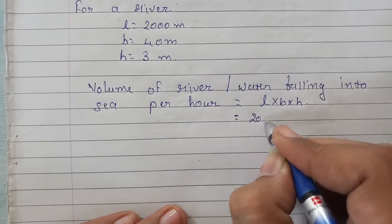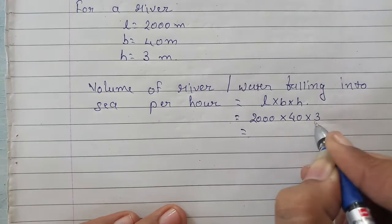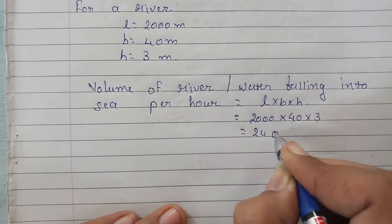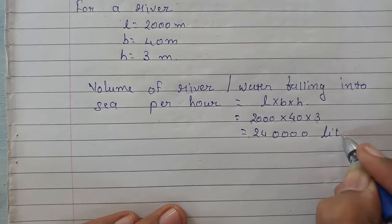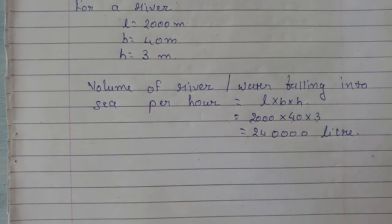So that will be like 2000 into 40 into 3. So 4, 3's are 12, 2's are 24. 0, 0, 0, 0. So much water is falling into the ocean per hour. We need to find how much is falling per minute.